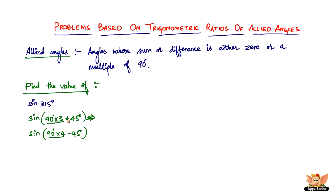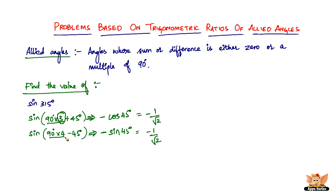Using 270 + theta: 315 degrees lies in the fourth quadrant, where sine is negative. Since the multiple of 90 is odd (3), sine changes to cosine — giving minus cosine 45. Using 360 − 45: 315 again lies in the fourth quadrant, so it's negative. Since the multiple is even (4), sine remains sine — giving minus sine 45. Both give minus 1 by root 2.